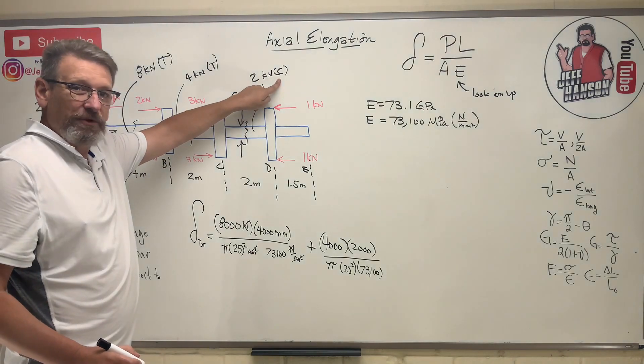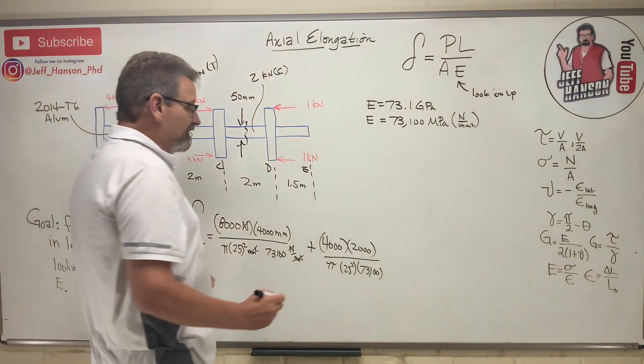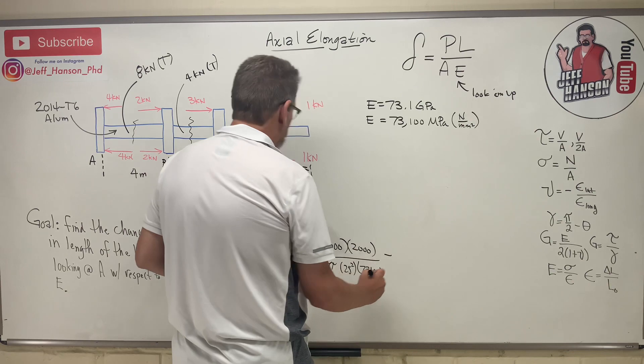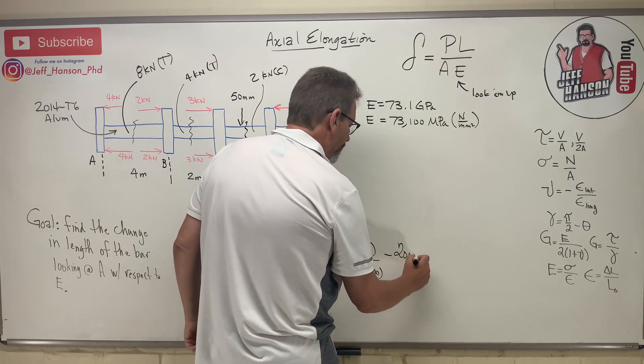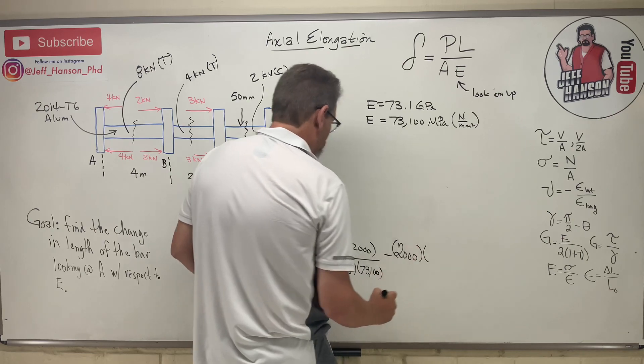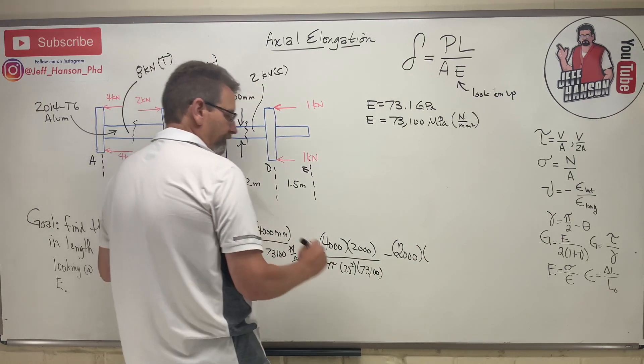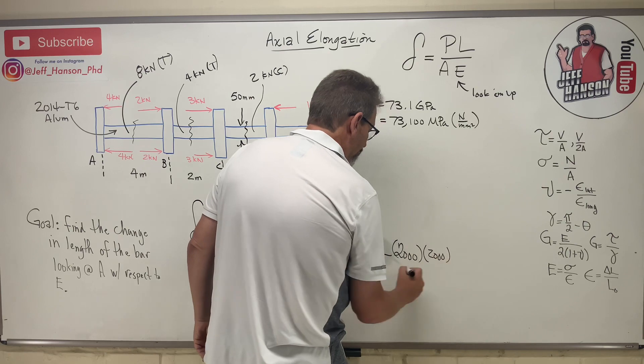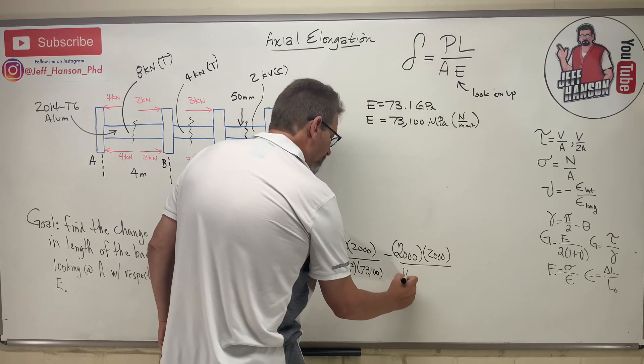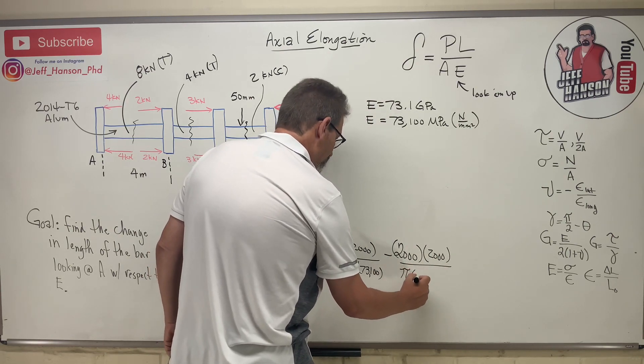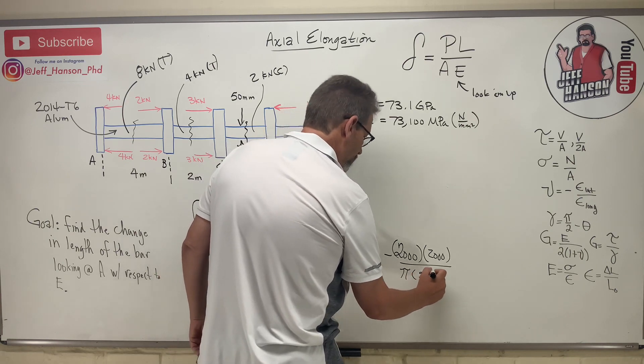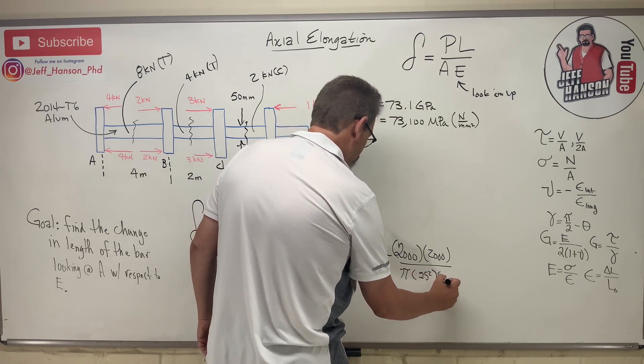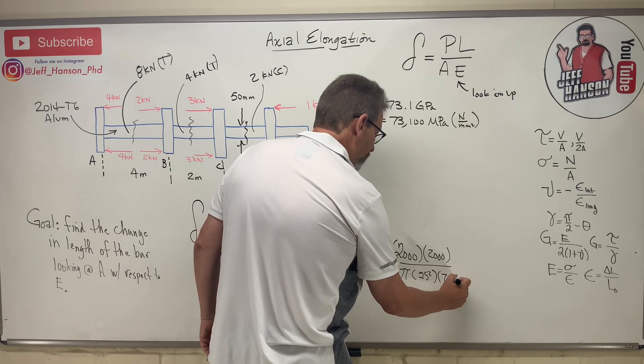And then finally this last section here - it's in compression, so that section is going to be shrinking, so I'm going to make him negative. Times 2,000, times the length 2,000, divided by pi times 25 squared times 73,100.